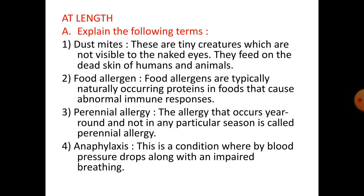Answer at length. Number 1A: Explain the following terms. Dust mites: These are tiny creatures which are not visible to the naked eye. They feed on the dead skin of humans and animals. Food allergen: Food allergens are typically naturally occurring proteins in foods that cause abnormal immune responses. Perennial allergy: The allergy that occurs year round and not in any particular season. Anaphylaxis: This is a condition whereby blood pressure drops along with impaired breathing.